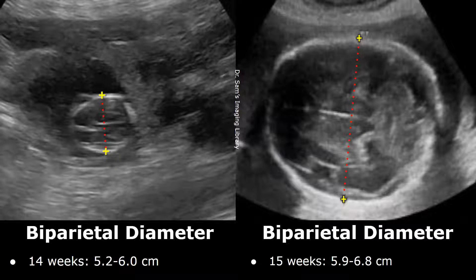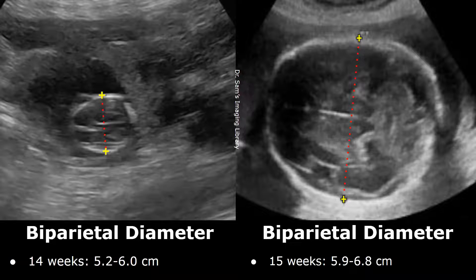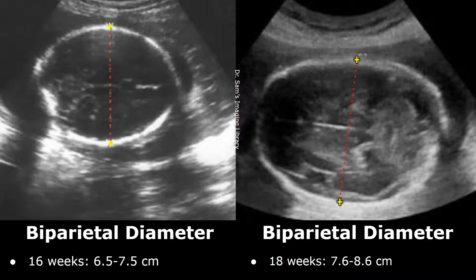At 14 weeks, the BPD value can be between 5.2 and 6 cm. And the BPD can reach 5.9 to 6.8 cm by 15 weeks. By 16 weeks, the biparietal diameter can be between 6.5 and 7.5 cm. And by 18 weeks, it can be between 7.6 and 8.6 cm.